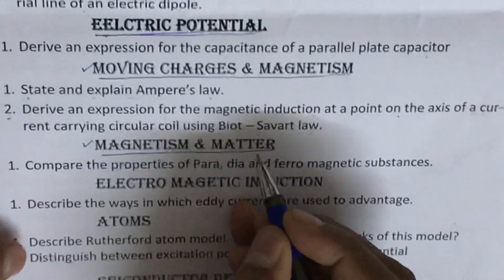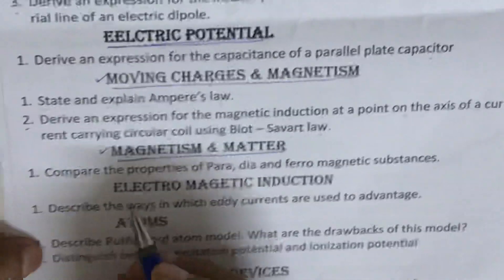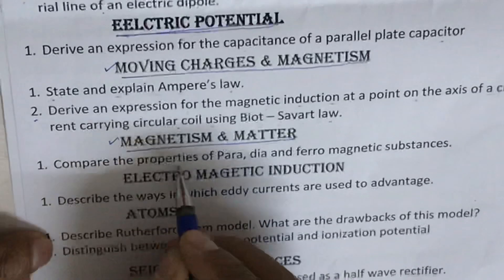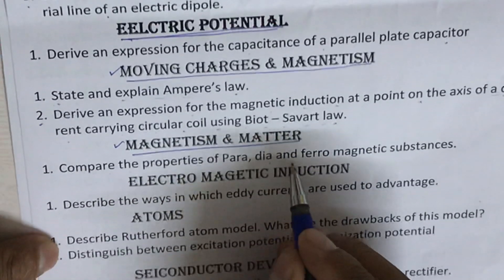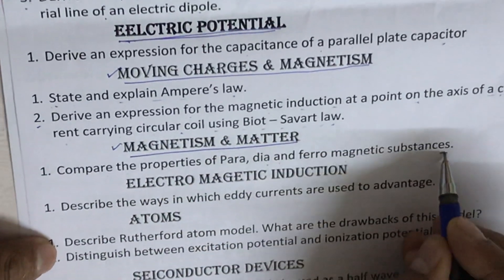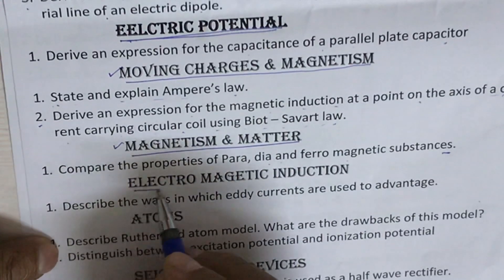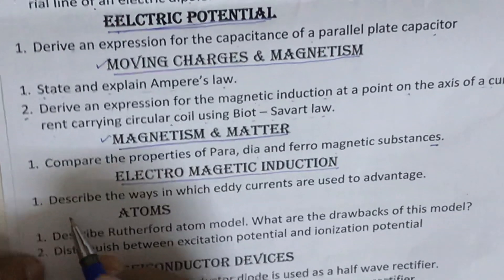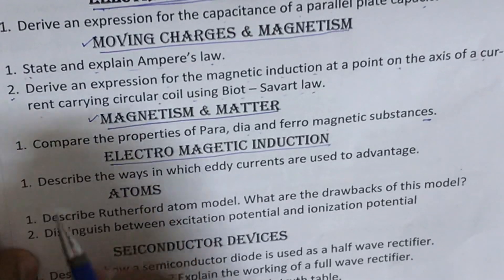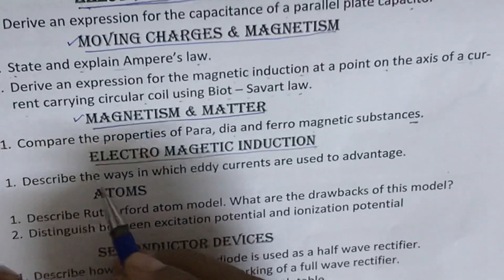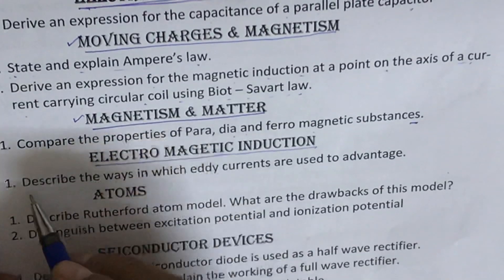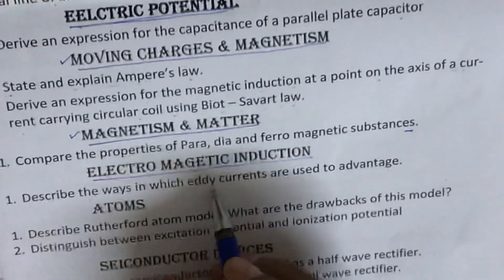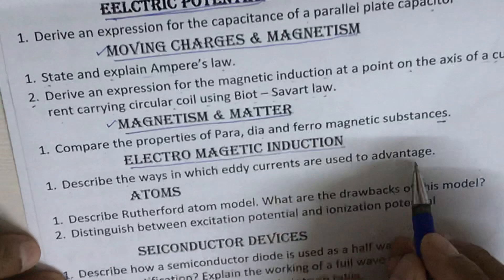The next topic is Magnetism and Matter. There is only one question: compare the properties of paramagnetic, diamagnetic, and ferromagnetic substances. The next topic is Electromagnetic Induction. Only one important question here, which has appeared in exams many times: describe the ways in which eddy currents are used to advantage.